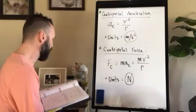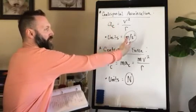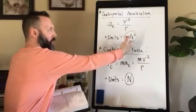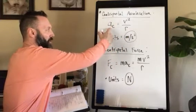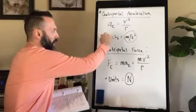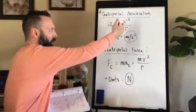If we look at centripetal acceleration, here's our formula. Acceleration is in meters per second squared. To calculate centripetal acceleration, labeled with the variable a subscript c, equals velocity squared divided by the radius.